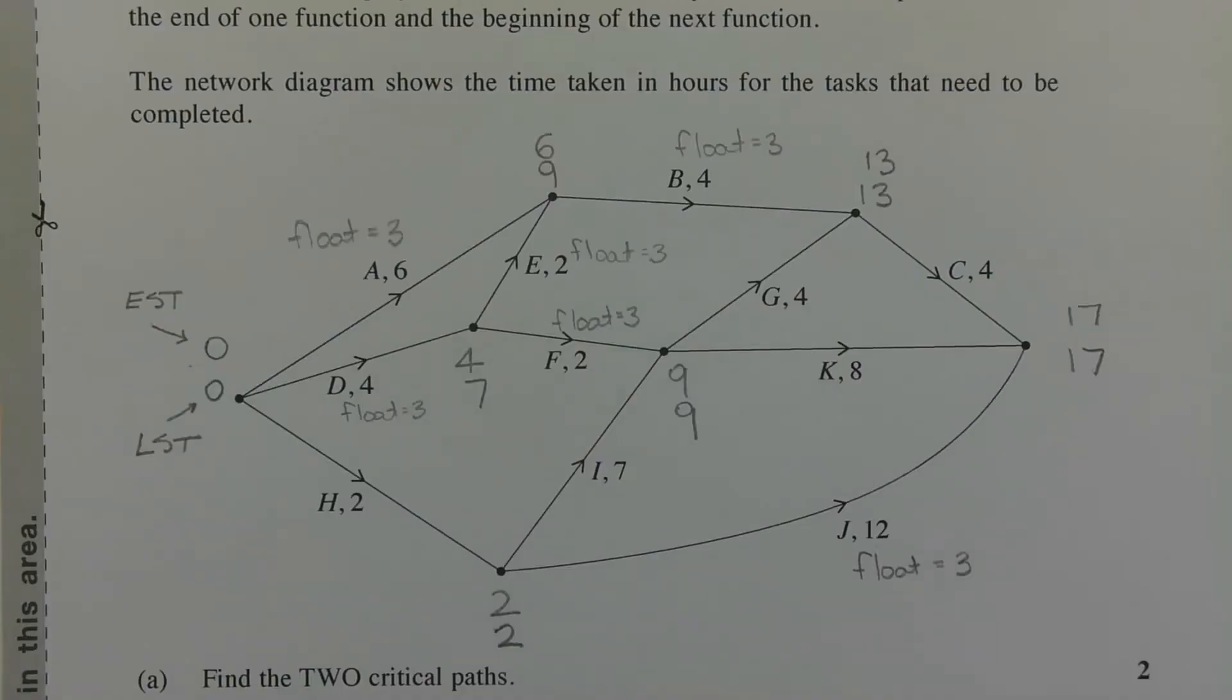In order to find the critical paths we need to identify the tasks that have zero float time. In other words, the tasks that must start on time in order to finish within a certain period of time. So we're going to use critical path analysis, that means finding the earliest start time and the latest start time of each task. I'm going to go through this briefly. Now notice that there's two numbers before and after each task. The top number is the earliest start time of that task and the bottom number is the latest start time. So that's EST and LST.